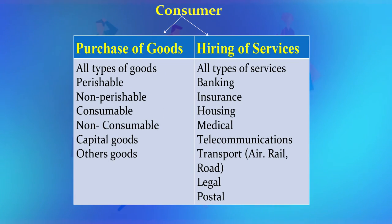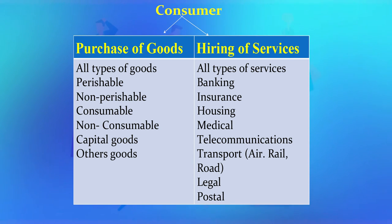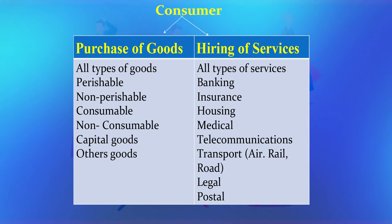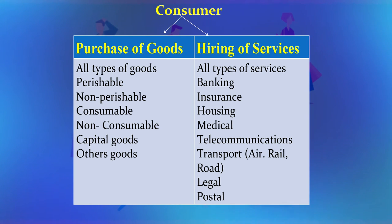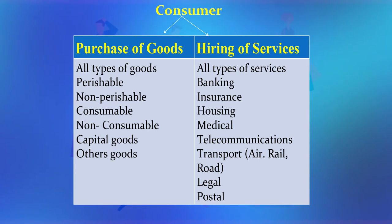So anybody can become a consumer — for consumer goods, non-consumer goods, capital goods, or industrial goods. The only thing to determine is whether the goods were purchased for commercial purpose or for earning one's livelihood. Even bulk quantity purchases, if proven to be for earning livelihood — as in the case of the disabled person — are covered. It is not the price or the bulk quantity that matters.